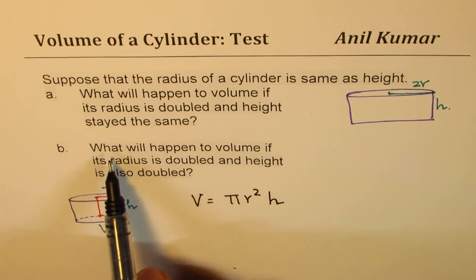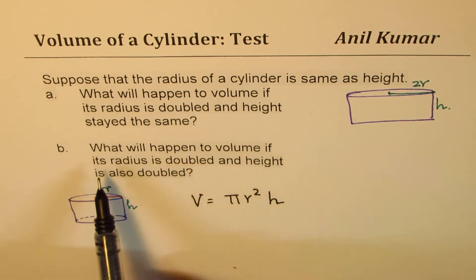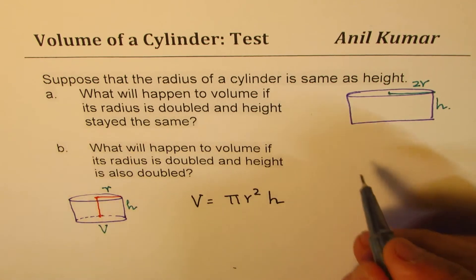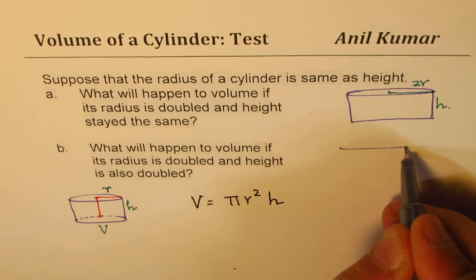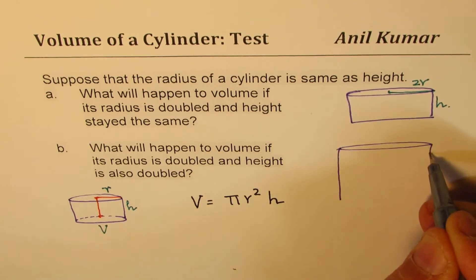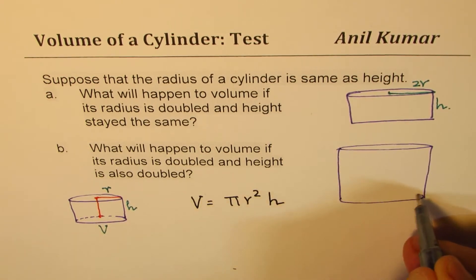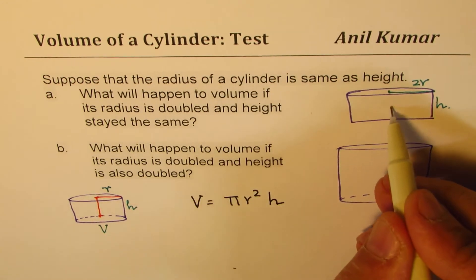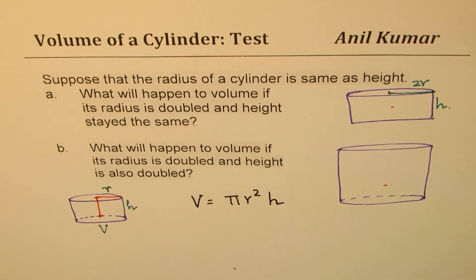The second question is: what will happen to volume if its radius is doubled and the height is also doubled? That means this time we are looking at a cylinder whose radius is doubled — that is the same — and height is also doubled, kind of like this. The volume is going to increase by how much? That's what you have to figure out. If V is the volume, what is going to be the volume in these two cases? You can pause the video, answer the question, and then look into my solutions.